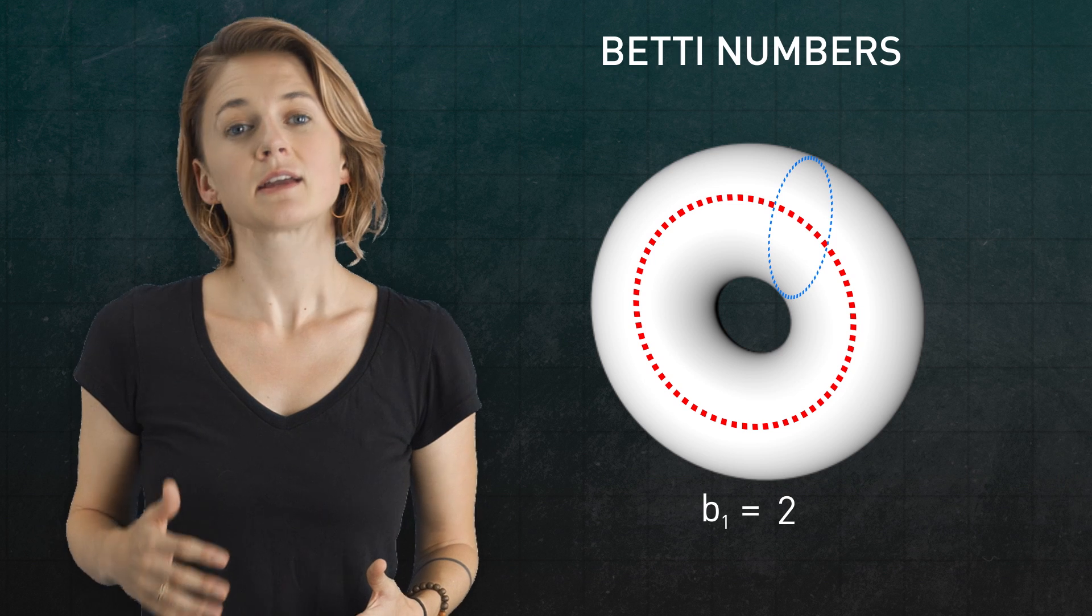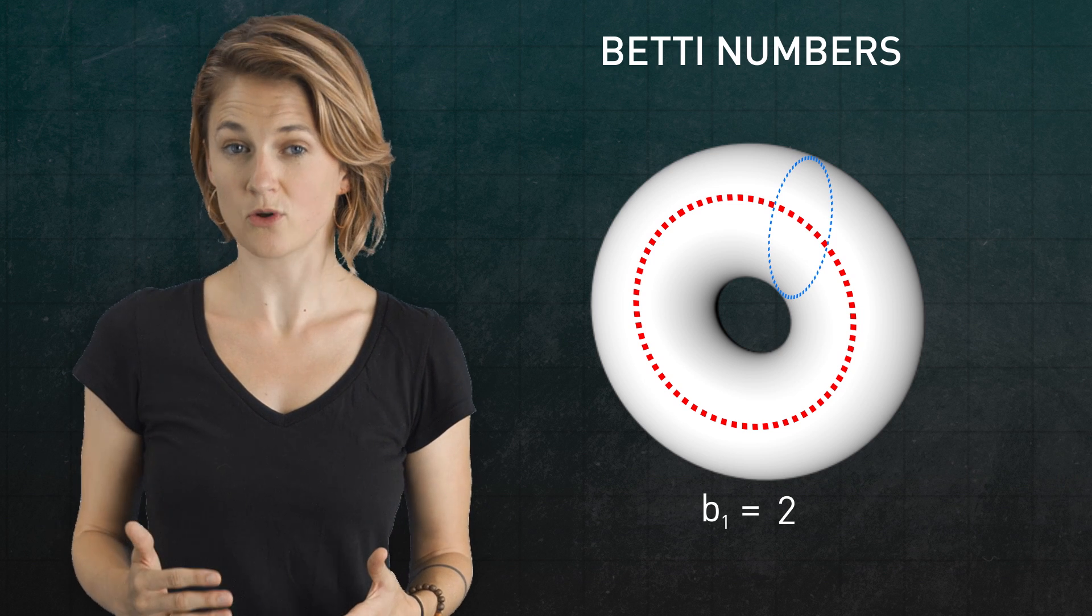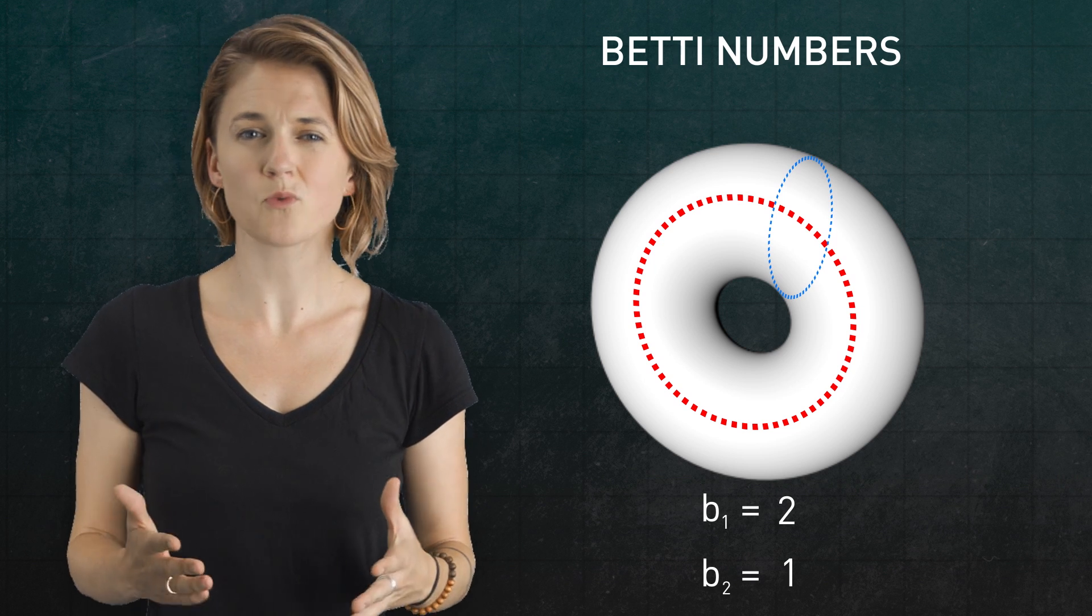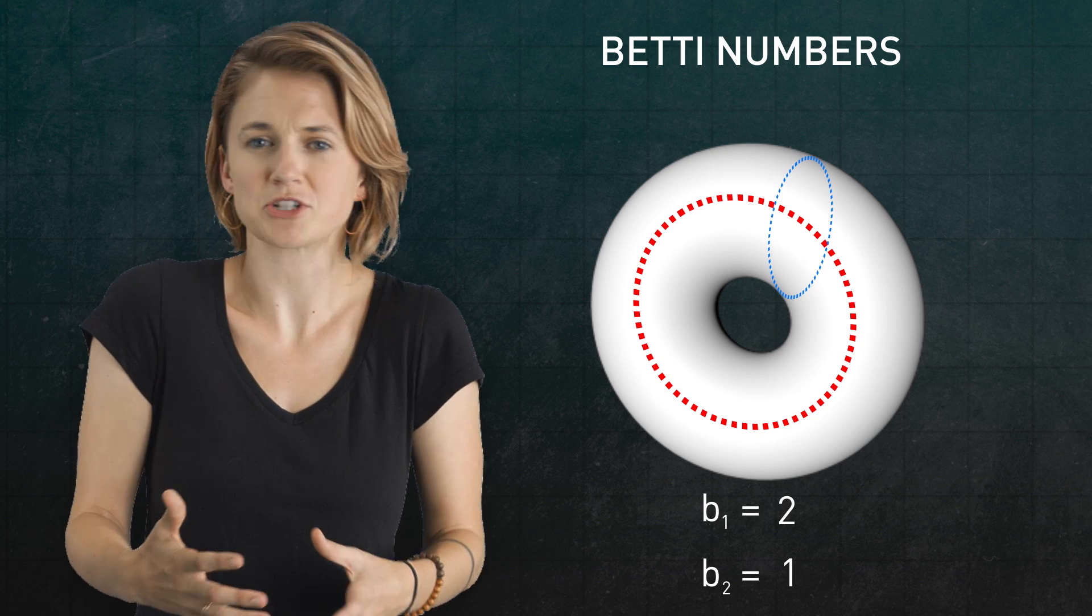The second Betty number counts the number of two-dimensional holes, which for the torus is one. The contents of the torus are a two-dimensional hole.